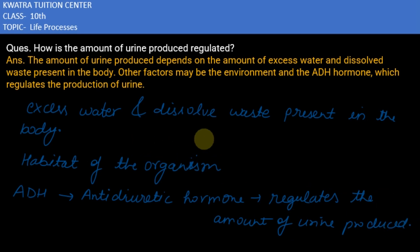So these are the factors on which the amount of urine produced is regulated. Thank you.